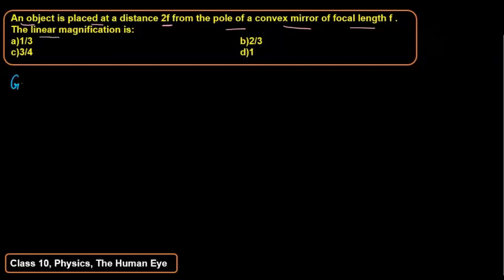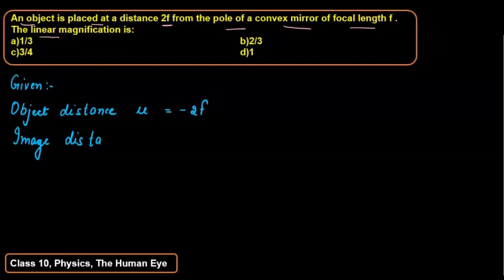So here first of all we can write given what is the question. First we can write object distance which we can write as small u, that it would be 2f. So we can write mirror convex, so we have to use negative sign convention. We have to calculate here image distance, so we can simply write v equals to we have to find it out.